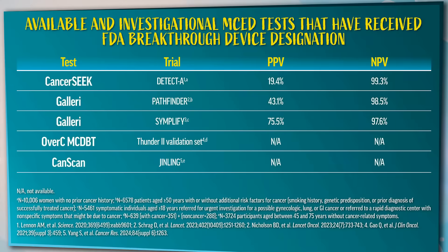Let's discuss why positive predictive value and negative predictive value are important measures related to the clinical utility of the test and how the different MCEDs compare. High PPV is important to reduce unnecessary workup, over-diagnosis, and over-treatment. A high negative predictive value is critically important to reduce the probability of missing potentially curable cancers.